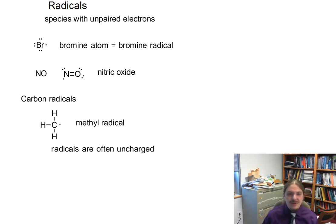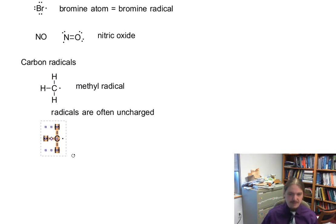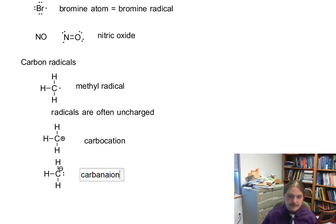This is a little bit different than the other two types of species that have three bonds to carbon. I'm going to contrast the structure of the carbon radical to the carbocation and the carbanion. The carbocation has three bonds, no lone pairs, and a positive charge. The carbanion has three bonds, one lone pair and a negative charge.